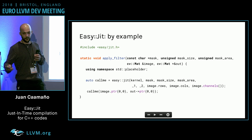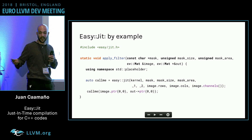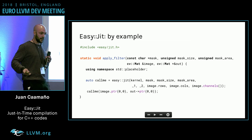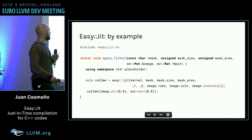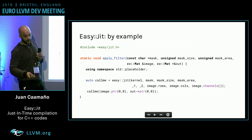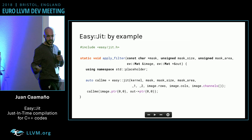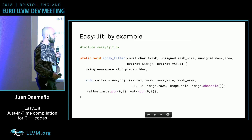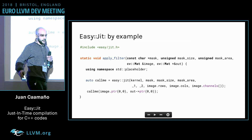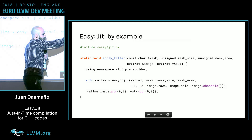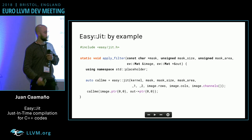For that, we use the EasyJIT library. If you recall the std::bind function from the C++ standard library, we try to follow the same semantics. We include the EasyJIT header file and call the EasyJIT function — the only function of the library. This function will generate a specialized version of the kernel function, grabbing the values of mask, mask size, and mask area, and inlining them into the kernel function code.